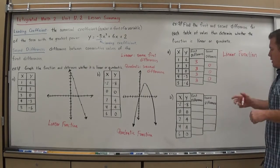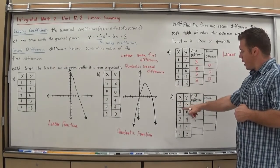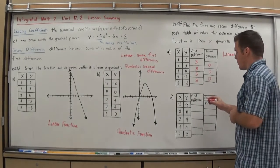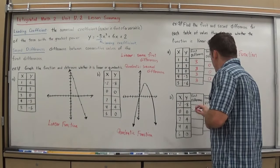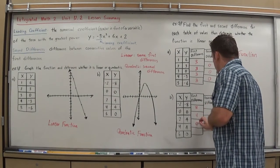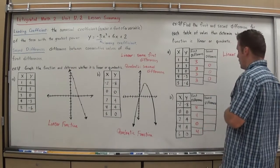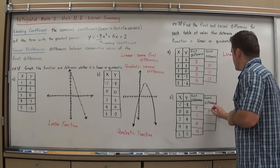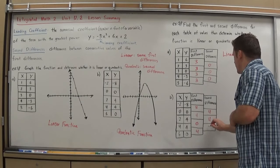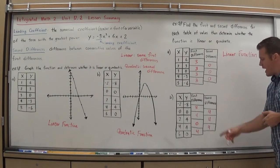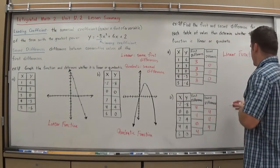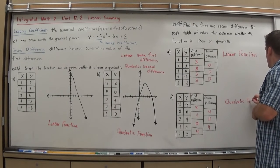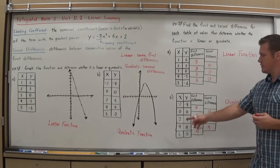Now let's look at the second table. The x values go up by 2 each time — not by 1, but it's consistent, so we can still do this. The first differences are: between negative 8 and 0 is 8; between 0 and 4 is 4; between 4 and 4 is 0; between 4 and 0 is 4. Those are not common first differences, so I keep going. The second differences are: between 8 and 4 is 4; between 4 and 0 is 4; between 0 and 4 is 4. Now I have common second differences, which makes this a quadratic function — and it's the exact same table I graphed before as the parabola.